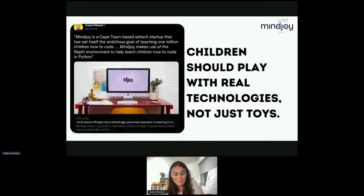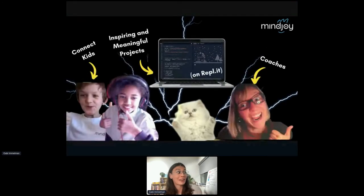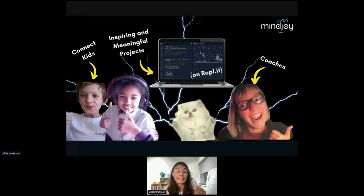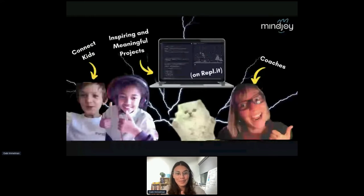We want to create learning environments where young people can learn with real feedback loops and real consequences. With that comes responsibility, challenge, and competency. At Mindjoy, we try to connect kids who have similar interest and skill levels together, connect them with inspiring and meaningful projects they can work on in Replit's multiplayer mode, and find a coach who can facilitate kids collaborating. We want coaches guiding from the side, with the environment containing all the knowledge.